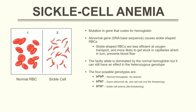Sickle cell anemia is when you have abnormal hemoglobin in your blood. The left-hand diagram shows normal red blood cells containing normal hemoglobin with their typical shape, whereas a sickle cell is a lot thinner and obviously less efficient at transporting oxygen. Sickle cell anemia is caused by a mutation in the gene that codes for hemoglobin. These abnormal genes cause sickle-shaped red blood cells, which are less efficient at oxygen transport and more likely to get stuck in the capillaries, preventing blood flow. The faulty allele is dominated by the normal hemoglobin allele, but can still have an effect in the heterozygous genotype, sort of like codominance.